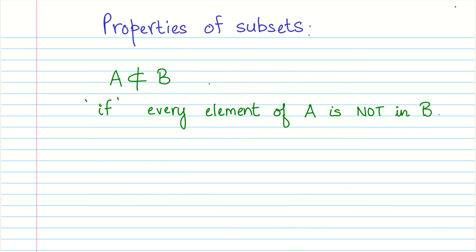Now let us look at the last property here. A is not a subset of B. And this kind of just gives you an idea of the criteria to try and say in which case a particular set is not a subset of another set.